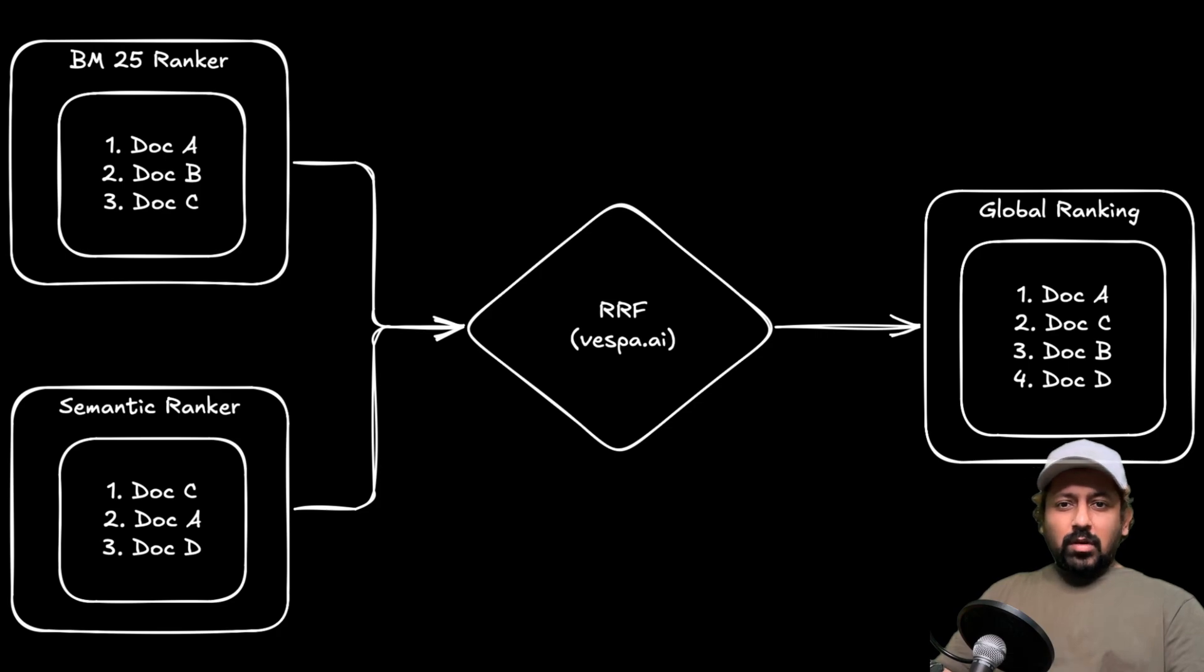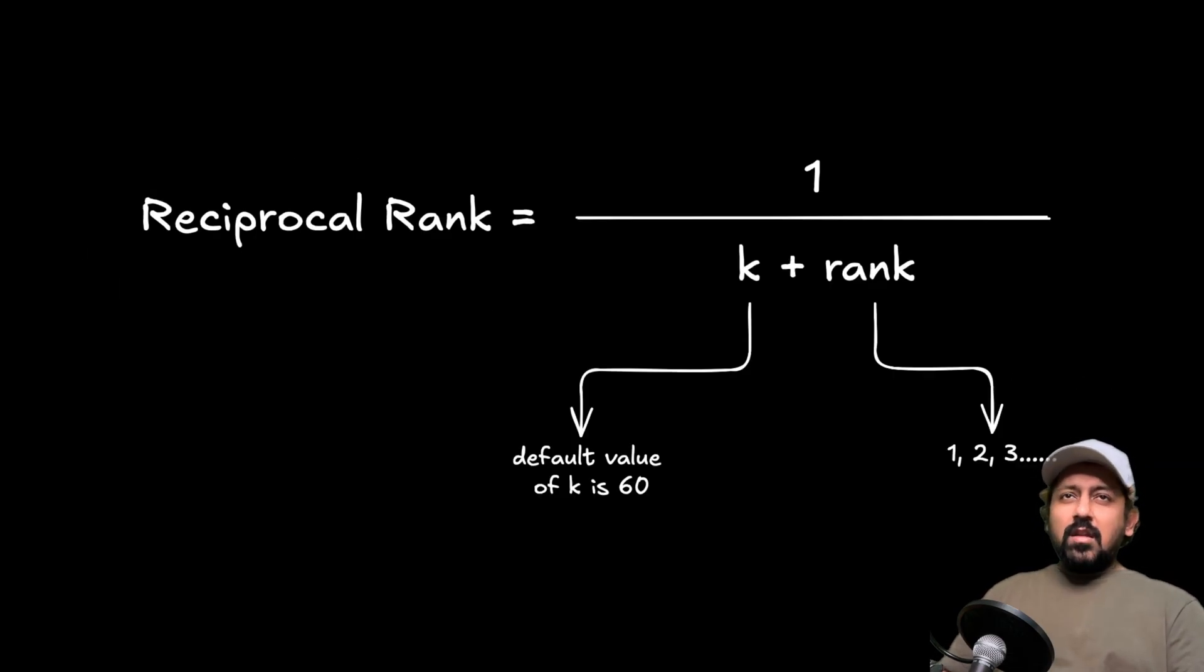So how does it work? Is there a formula or something? Yes there is and it's very simple. The reciprocal rank is defined as 1 divided by k plus rank. So this is the reciprocal rank for a ranked document. So rank can be any position, 1, 2, 3 and so on, and k...